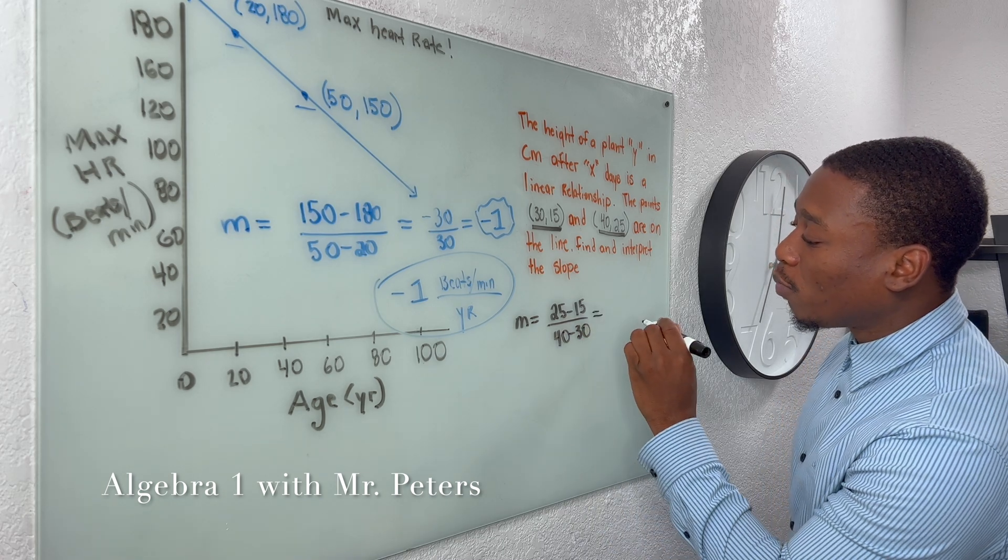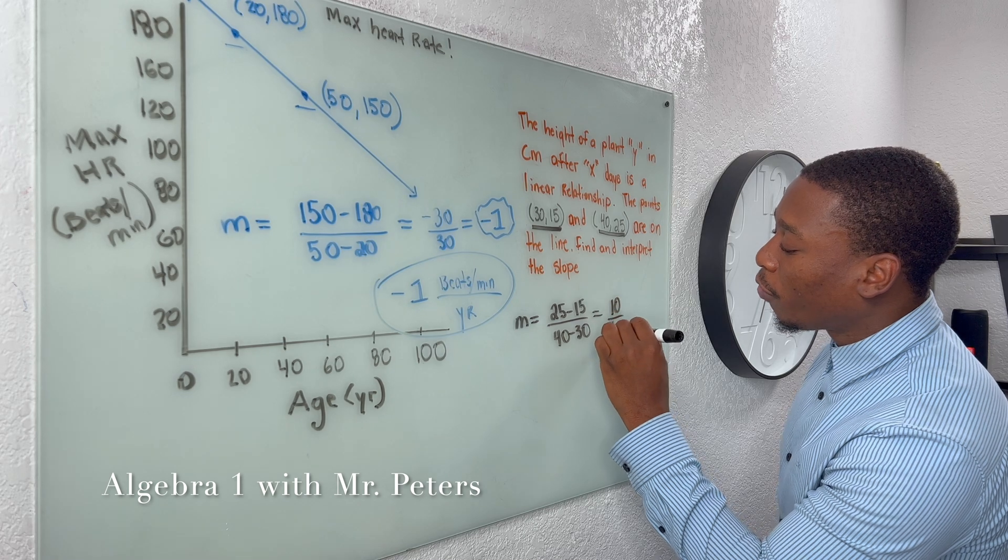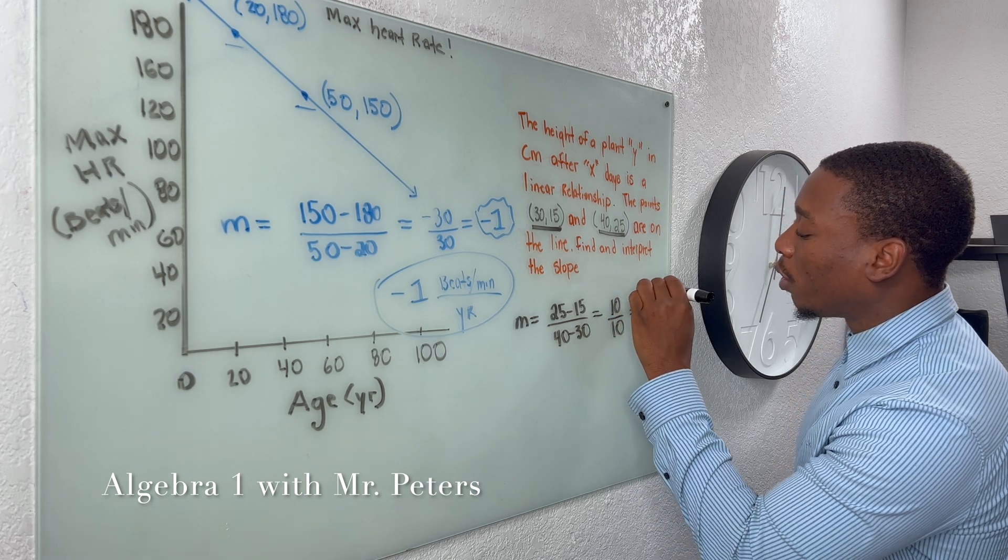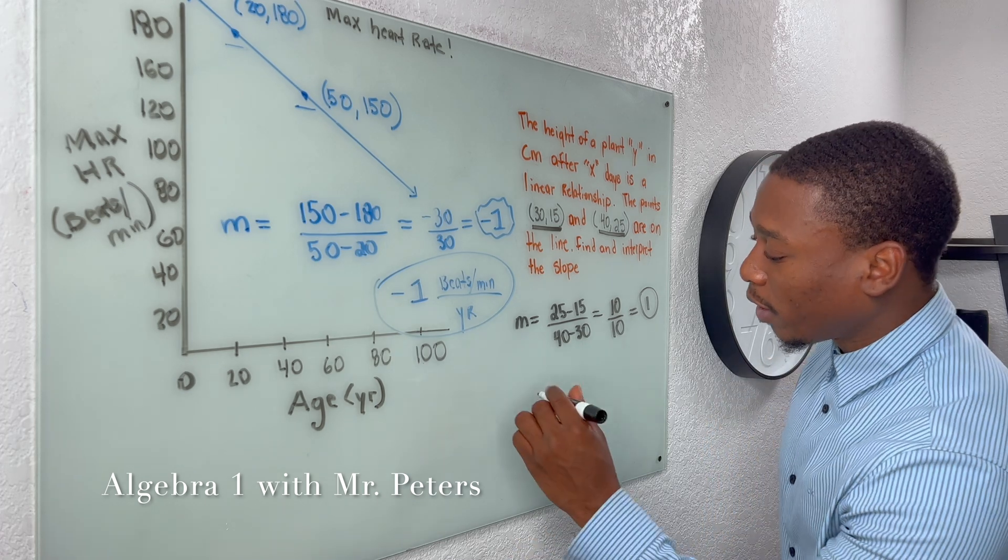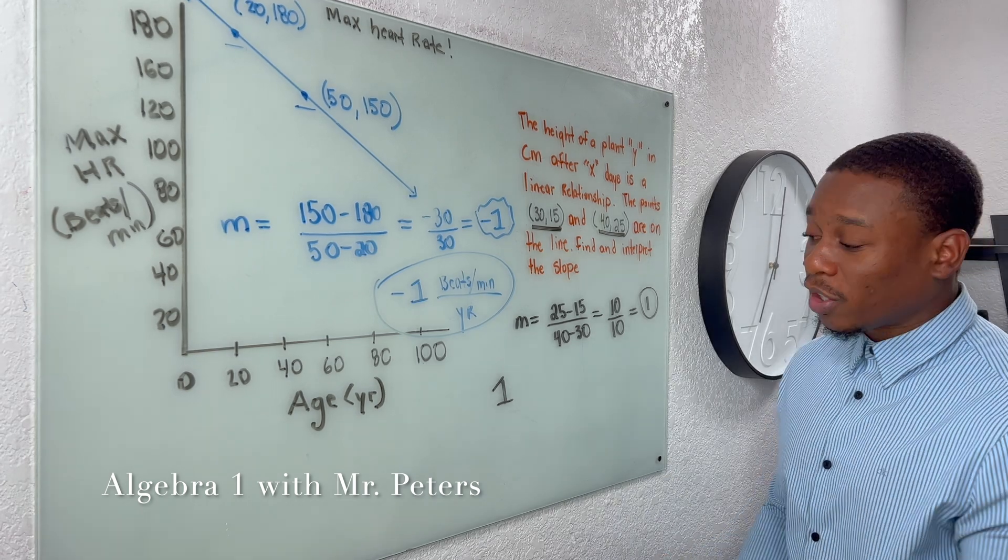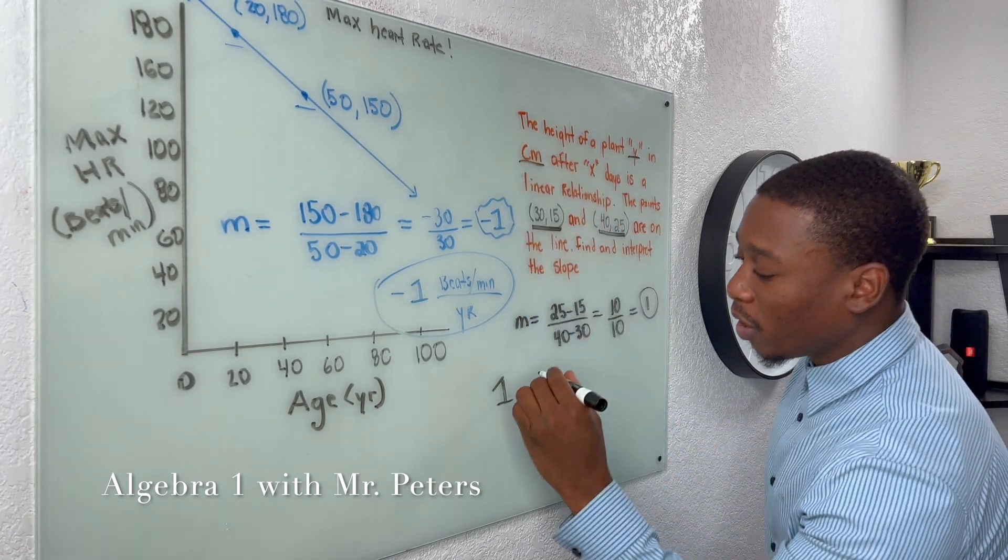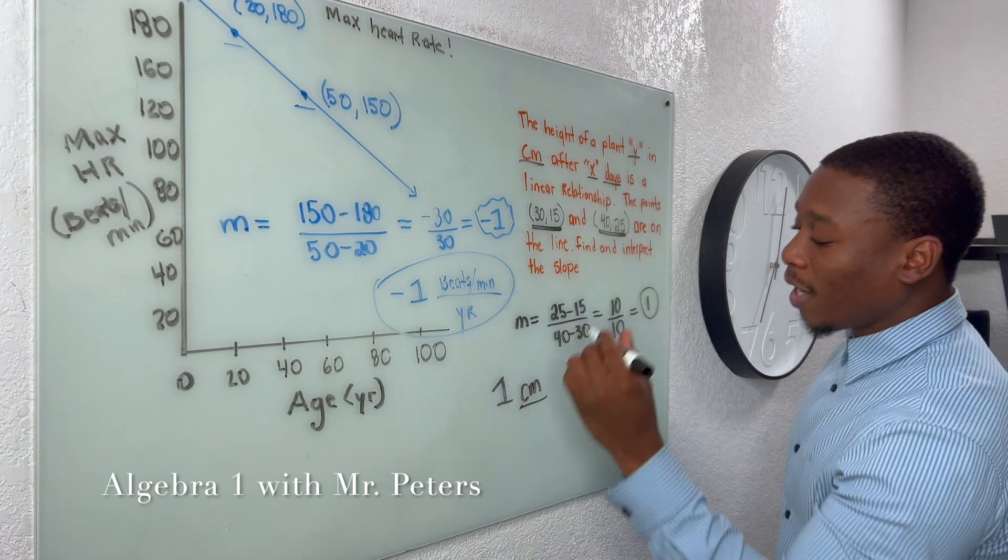And when we simplify this more, we're going to get 10 over 10, which is equal to one. Now, same question again, what does that one represent? Well, once we rewrite our answer and we talk about the units, we know Y represents centimeters and X represents days.